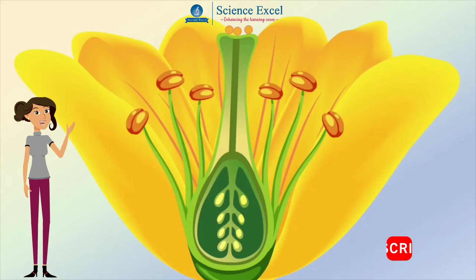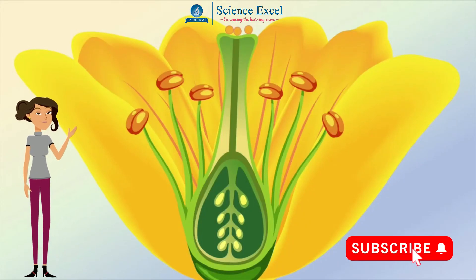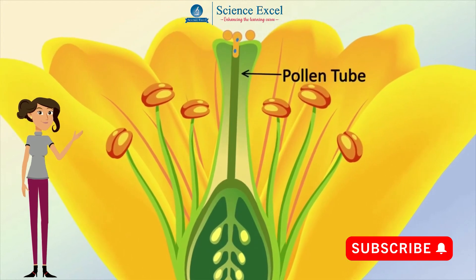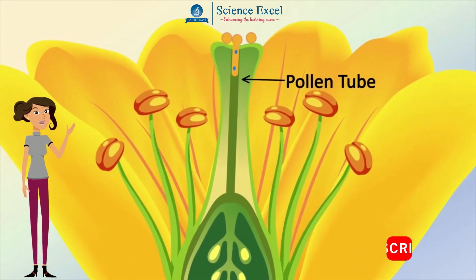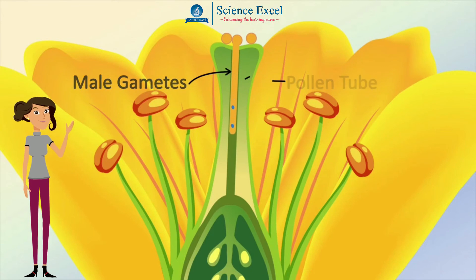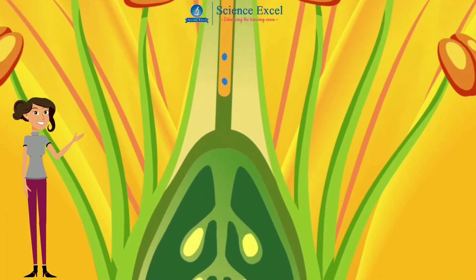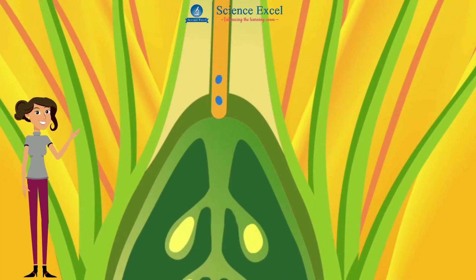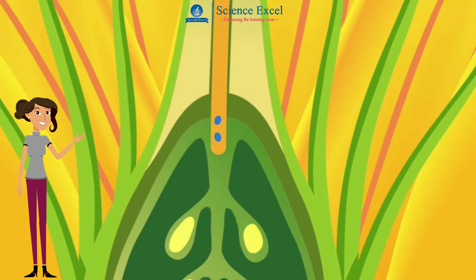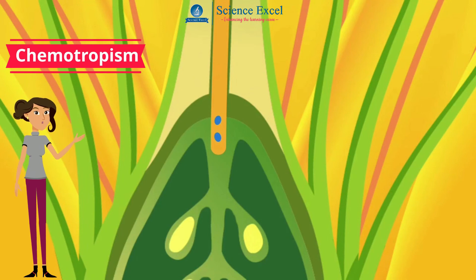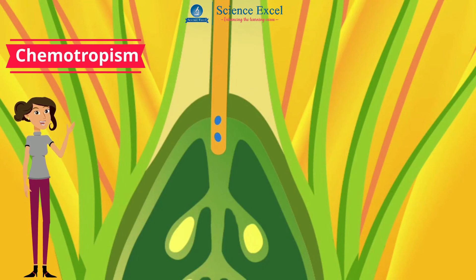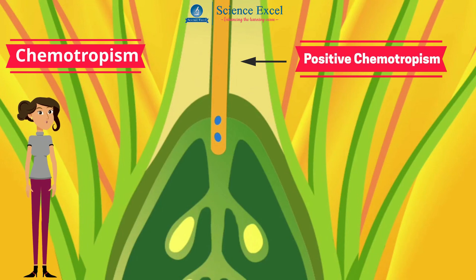When pollen grains settle on the stigma, the plant grows a pollen tube. This pollen tube grows down the style towards the ovule during fertilization. This growth of a plant part in response to a certain chemical stimulus is known as chemotropism, and the growth of the pollen tube is an example of positive chemotropism.